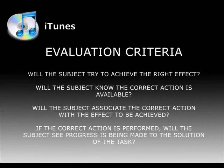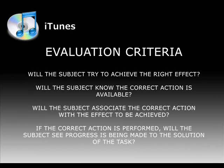Evaluation Criteria: Will the subject try to achieve the right effect? Users may know what effect to achieve because it is part of their original task, because they have experience using a system, or because the system tells them to do it. Will the subject know the correct action is available? Users may know an action is available by experience, by seeing a device like a button, or by seeing a representation of an action like a menu entry. Will the subject associate the correct action with the effect to be achieved? Users may know an appropriate action by experience, because the interface provides a prompt or label, or because all other actions look wrong.